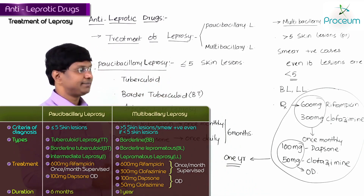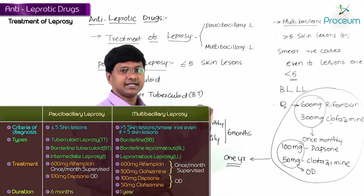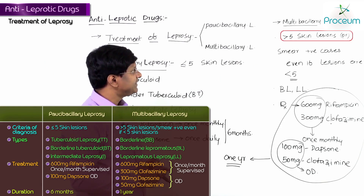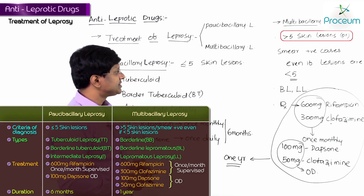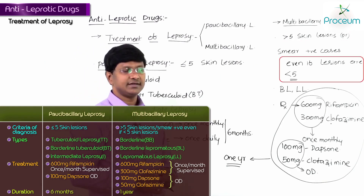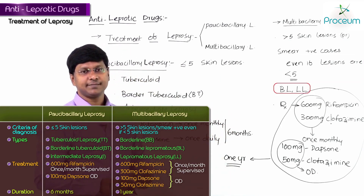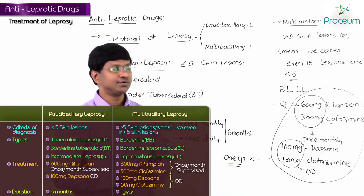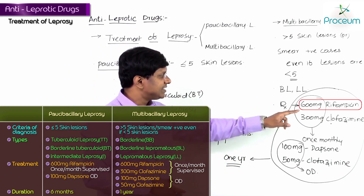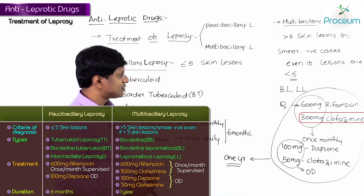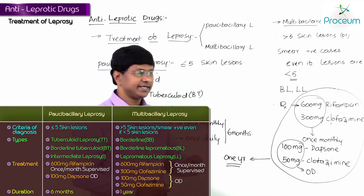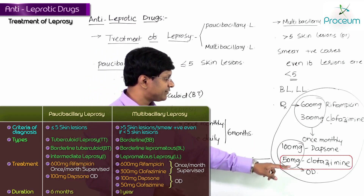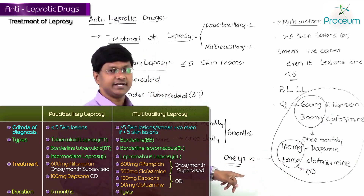To summarize multibacillary leprosy: more than five skin lesions or smear positive cases, even if lesions are less than five. Types include borderline leprosy and lepromatous leprosy. Treatment: 600 mg rifampicin and 300 mg clofazimine once monthly supervised, plus 100 mg dapsone and 50 mg clofazimine once daily for one year.